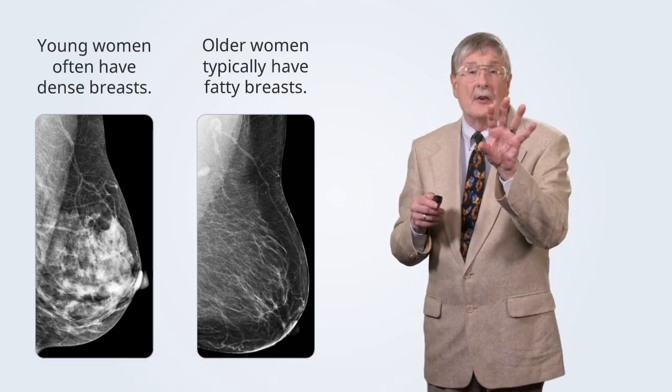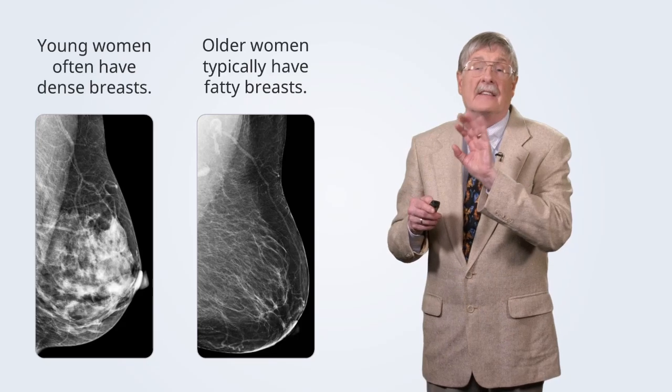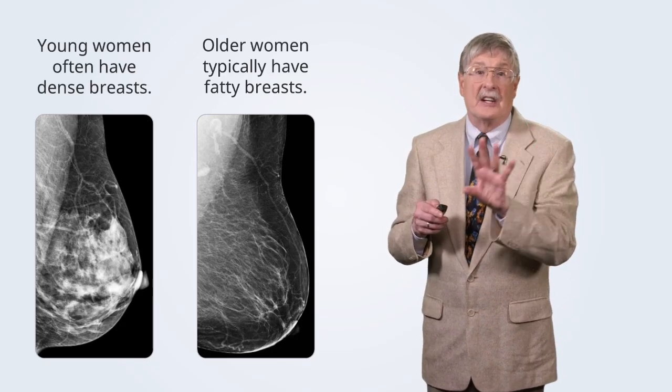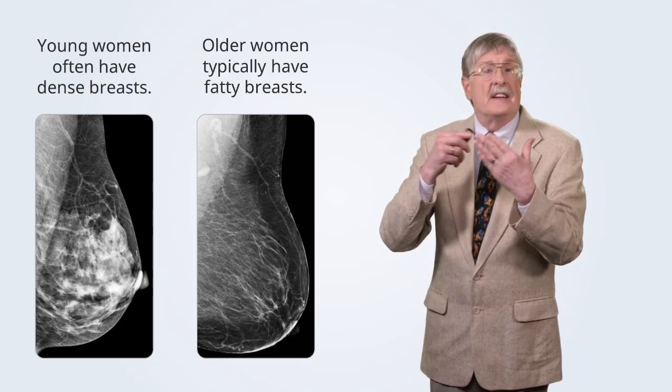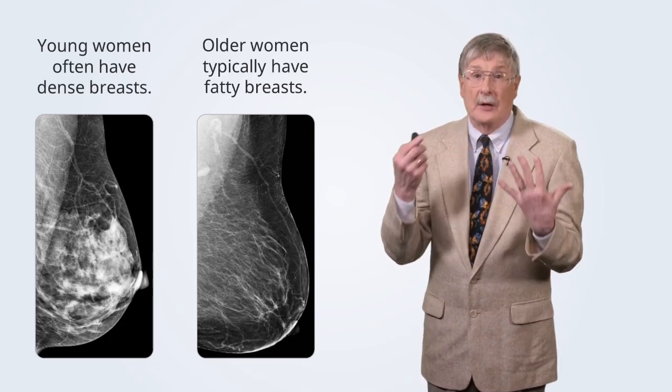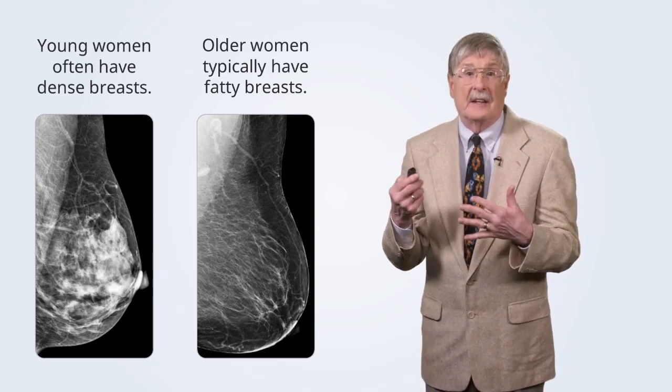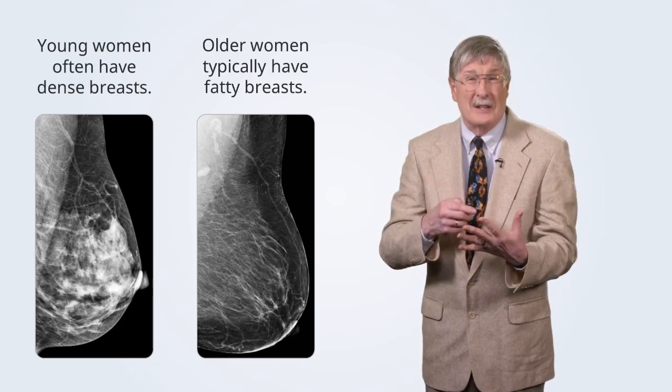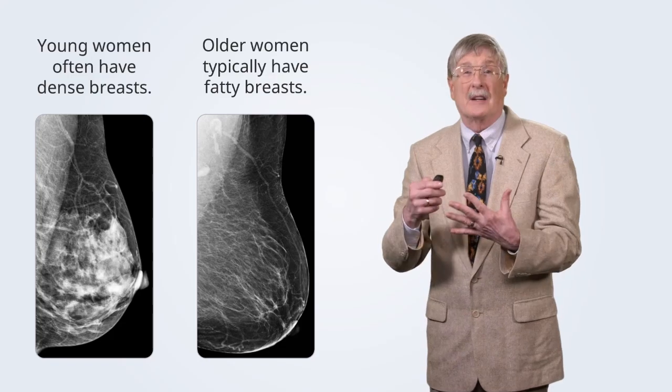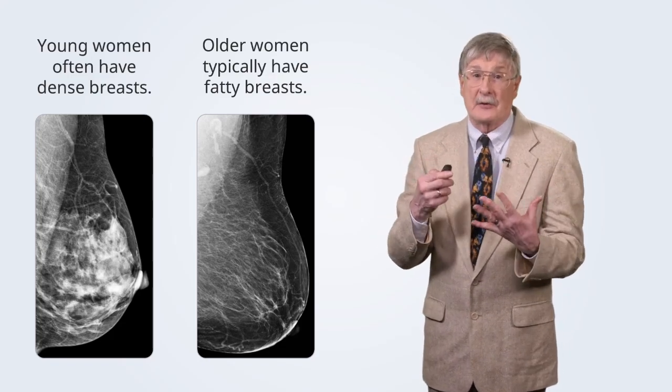On the other hand, in the geriatric patient, the breast is very radiolucent because there isn't much parenchyma or stromal elements. You can see through it quite easily, making it much harder for a tumor to hide.